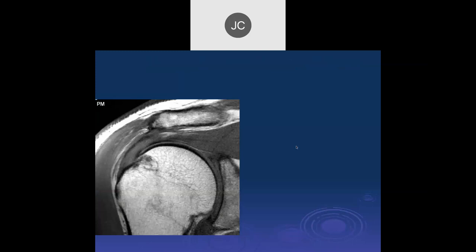Robert: we have another coronal looking at the supraspinatus. It looks pretty thick and increased in signal. I don't see a discrete tear. So there we see tendinosis, and we can also see a traction erosion on the bone — a repetitive traction area. That tendon looks pretty normal to me other than a slight increase in signal.